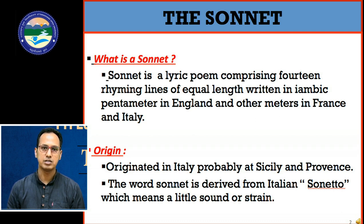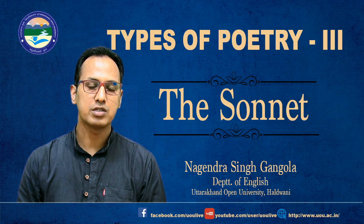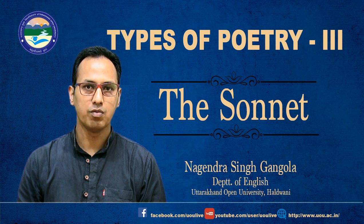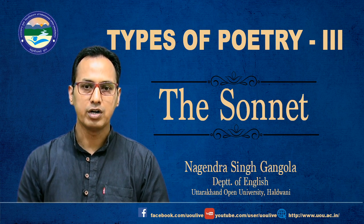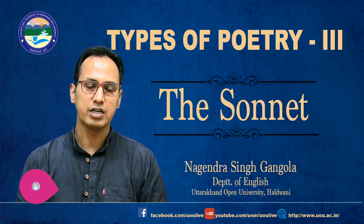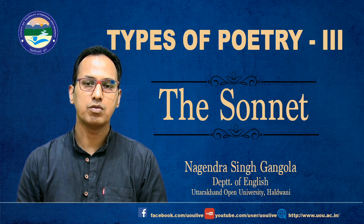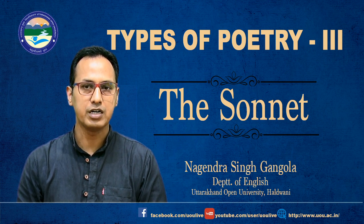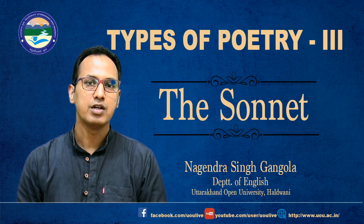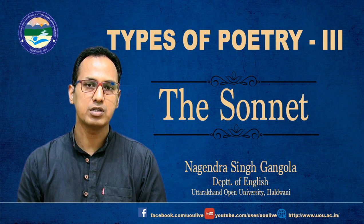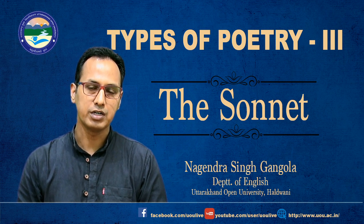It is supposed that the sonnet was originated in Italy, particularly in two towns — Sicily and Provence. The word 'sonnet' was derived from the Italian 'sonetto', which means a little sound or strain. When the sonnet came to England, two persons were responsible: Henry Howard, Earl of Surrey, and his friend — both were involved in the political scenario. Surrey used the sonnet and took freedom to invent and experiment with the form. Then Shakespeare used it so much that people started calling it the Shakespearean sonnet in England.